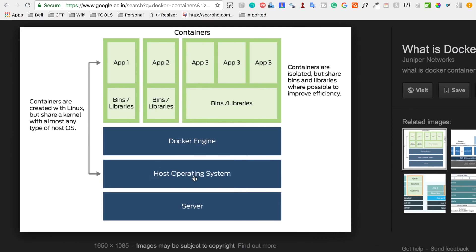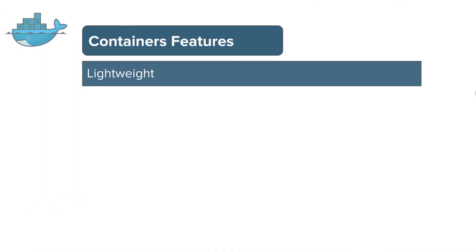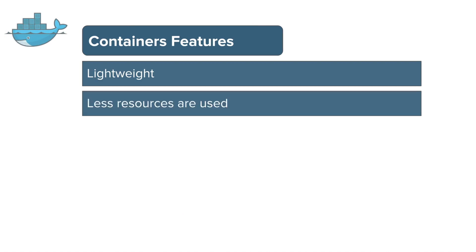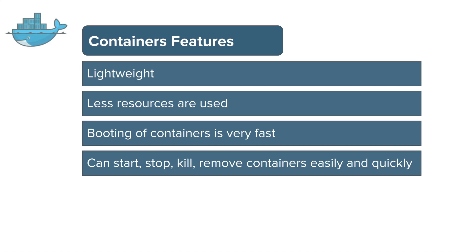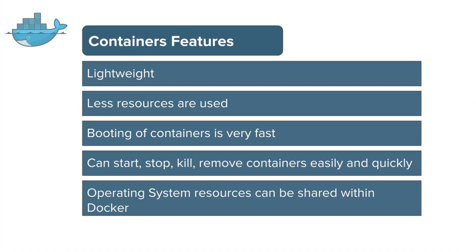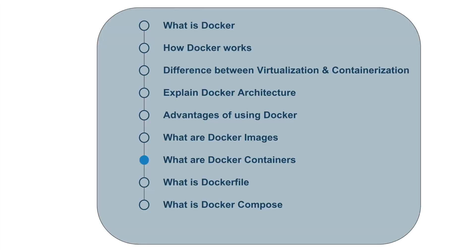We have the host operating system where we have a Docker engine, and in the containers we have our applications running. Some features of containers: they are very lightweight and require very few resources — unlike virtual machines, they consume only what is required to run an application. Booting is very fast; you can start, stop, kill, and remove containers very easily and quickly. They can also share operating system resources.